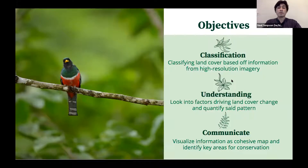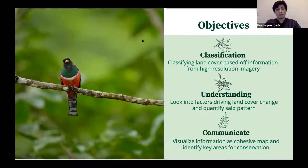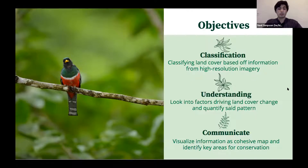And then lastly, to communicate and visualize this information into a cohesive map and identify key areas for conservation — not only for FCAT but for local populations in the rainforest to understand and look at.